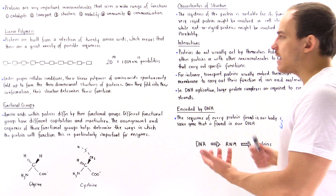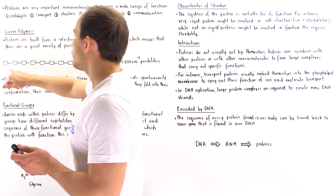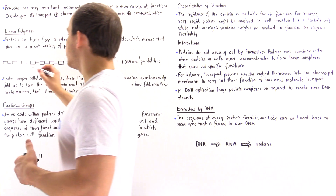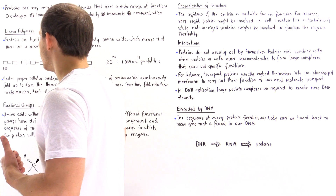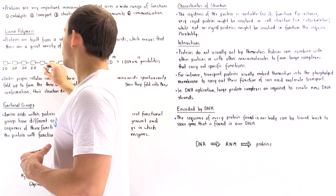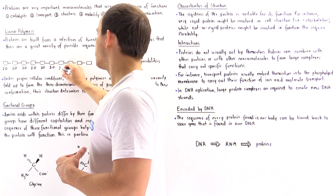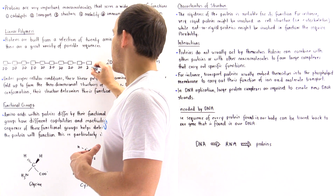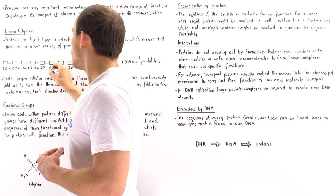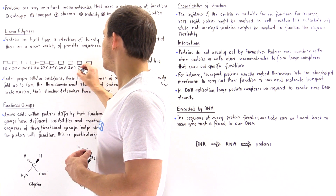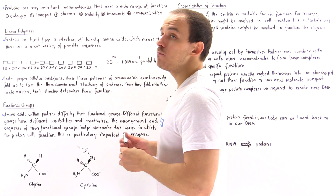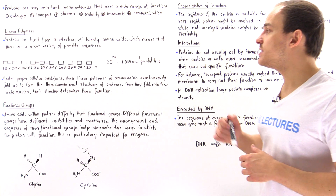To carry this out, we have to use a bit of mathematics and probability. We have 20 different possibilities for amino acid number 1, and the same is true for amino acid numbers 2 through 10. We multiply these out to find the total number of possibilities, and we get 20 to the 10th power, which is about 1.024 times 10 to the 13th possibilities.